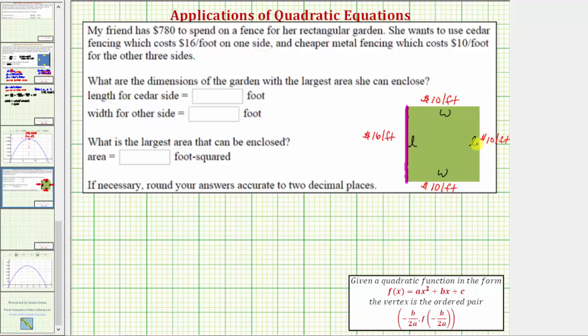Because she has $780 to spend, we can now set up a cost equation, where the cost of each side is the cost per foot times the length of the side. So the cost would be 16L plus 10L plus 10W plus 10W, and this must equal $780. Combining like terms, we have 26L plus 20W equals 780.